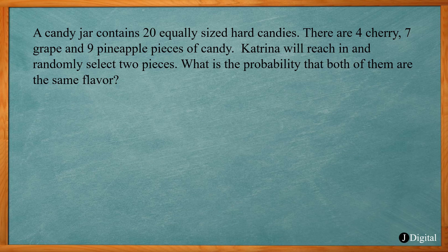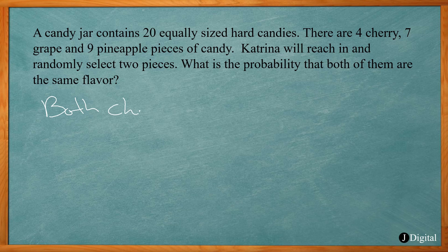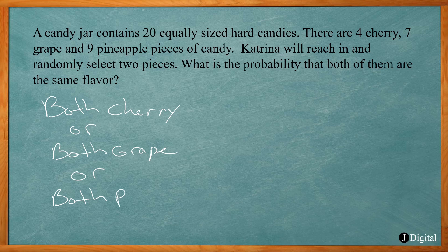The fourth problem uses the same candy jar: four cherry, seven grape, and nine pineapple out of 20 total. Katrina selects two pieces — what is the probability that both are the same flavor? This is different from the last problem. We need to break it down: what's the probability that both are cherry, OR both are grape, OR both are pineapple?